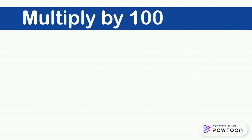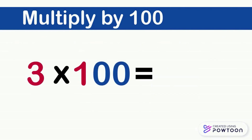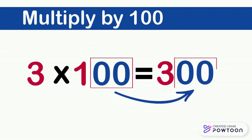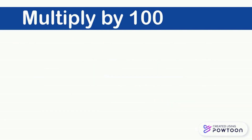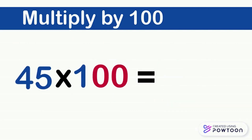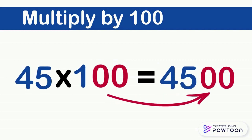So when we want to multiply a number by 100, we write the number, then we put two 0s to the right of this number. Another example: 45 times 100. To multiply 45 by 100, we write 45, then we put two 0s to the right of 45. So 45 times 100 equals 4500.